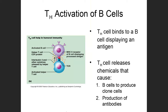Helper T cells, which are part of the cell-mediated system, are kind of the generals of the entire immune system. They bind to things displayed by antigen-presenting cells and make the final determination as to whether they're looking at something actually harmful. If they are, they activate the B cell so it will start to divide and eventually produce antibodies — so they're in charge of activating the humoral system.